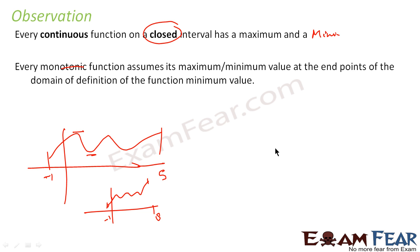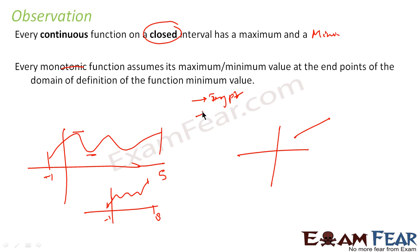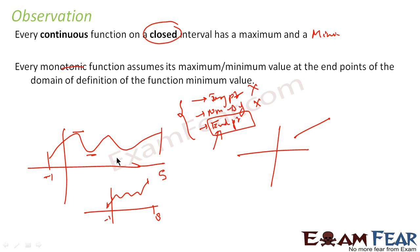A monotonic function assumes a maxima and minima at the end points. For example, a monotonic function that is strictly increasing or decreasing will take maxima and minima only at the end points. Since there is no turning point and it is monotonic, it is differentiable everywhere. So the other two cases — turning point and non-differentiable point — are not applicable. For a monotonic function, the only point where it can have maximum or minimum is the end point. For a continuous function that is always differentiable, it can have maximum or minimum either at end points or at the turning point.